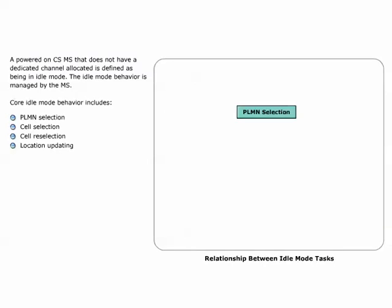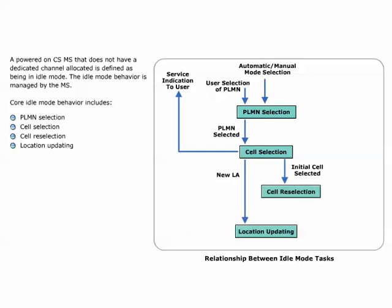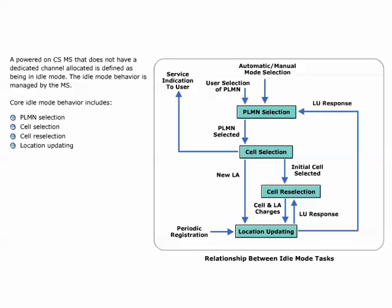A powered-on circuit-switched mobile station that does not have a dedicated channel allocated is defined as being in idle mode. While in idle mode, it is important that the mobile is both able to access and be reached by the system. When a mobile is powered on, it immediately attempts to make contact with the GSM Public Land Mobile Network. The particular PLMN contacted may be selected either automatically or manually. The MS will look for and select a suitable cell of the chosen PLMN. It will then tune to the control channel of the cell to receive information about the available services provided by the PLMN. This selection is known as camping on a cell.